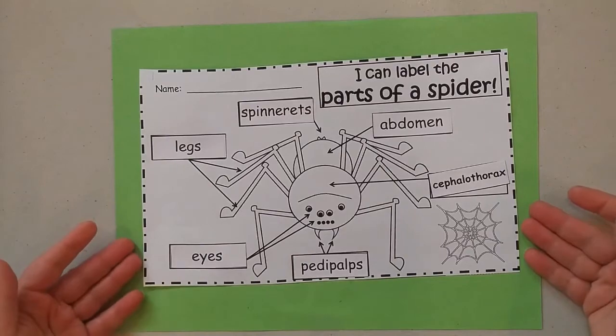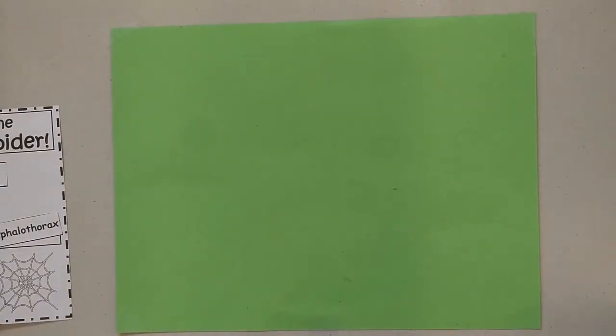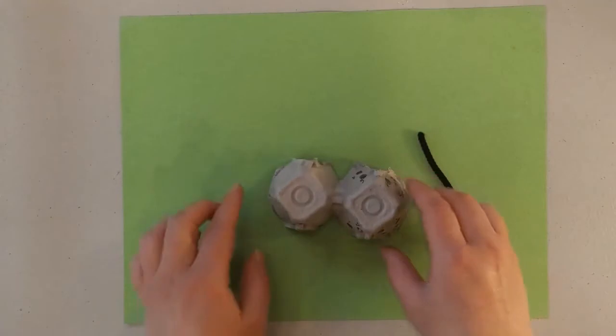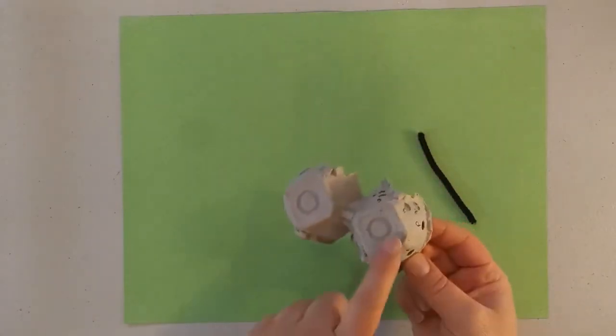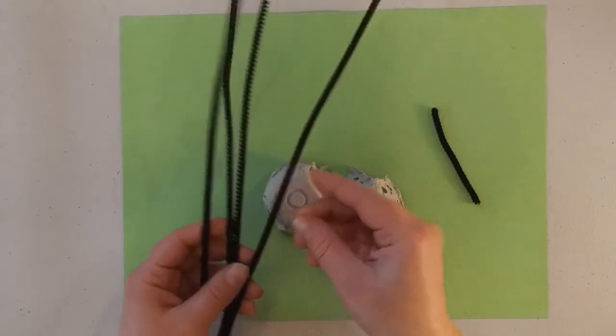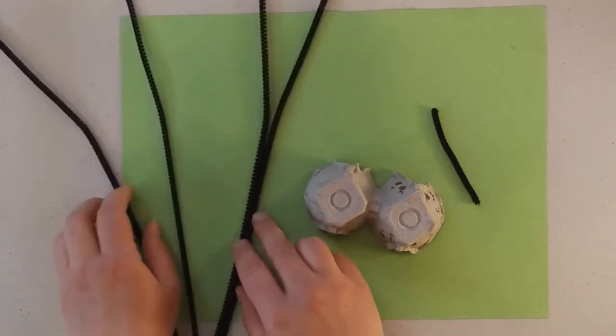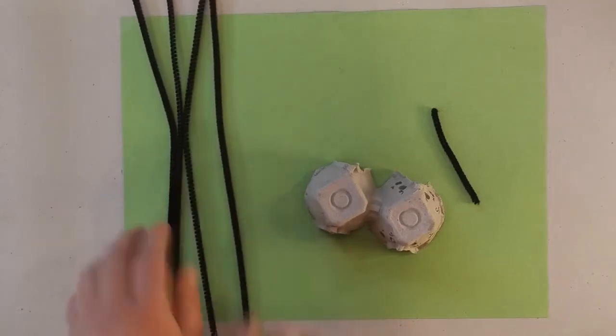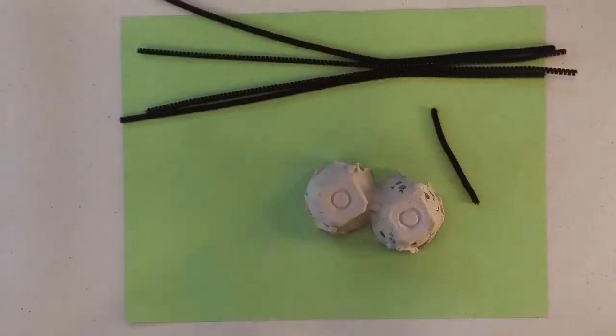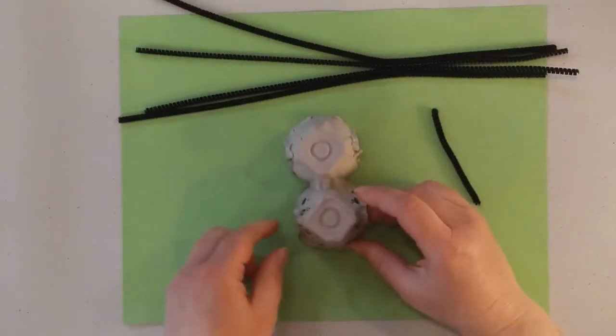Now we're going to get started on our spider model. I'm going to bring onto my paper in front of me my two-cup egg carton that was in my packet. So one, two cups, and then I have a little short black piece of pipe cleaner. And then you're going to have four black or brown pipe cleaners. You really, if you were going to do this on your own, you could use whatever colors you wanted to, but I had lots of black and brown and those are pretty typical spider colors. So that's what you got from me. I've got my pipe cleaners and I've got my egg carton and we are going to make our spider.